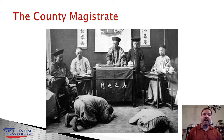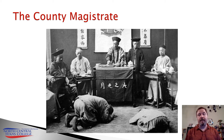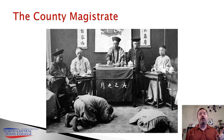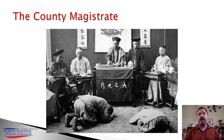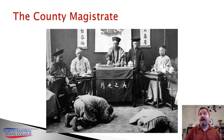Each magistrate was given a four-year term in the county over which they had authority. After four years, they would be cycled into a different county. You were never allowed to be a magistrate in the county from which you came. Moving magistrates around and keeping them from their home county prevented the formation of cabals that might pose an eventual threat to the Qing dynasty.